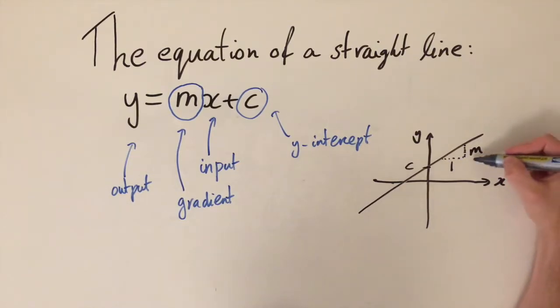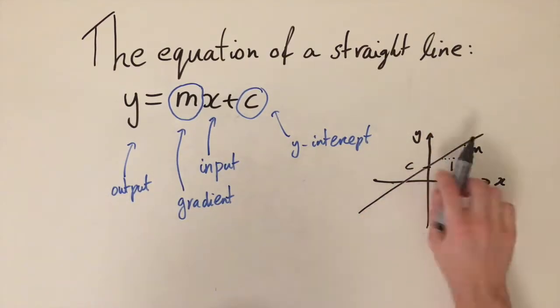If you think about making m really big, then this is just going to push this line upwards and we're going to get a steeper gradient. So this is what these m and c constants mean.